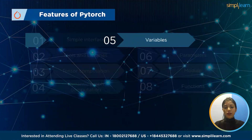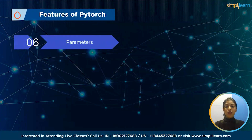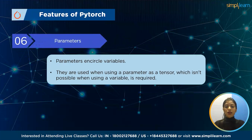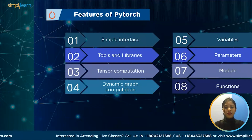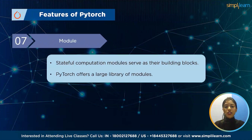Next, variables: for the purpose of holding the gradient, the variable is enclosed outside the tensor, and a computational graph's node is represented by it. Next, parameters: parameters encircle variables and are used when using a parameter as a tensor is required, which isn't possible when using a variable. Next, modules: stateful computation modules serve as their building blocks. In order to simplify and facilitate the creation of complex multi-layer neural networks, PyTorch offers a large library of modules.